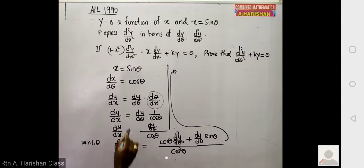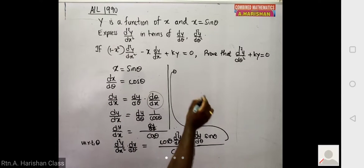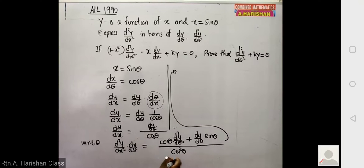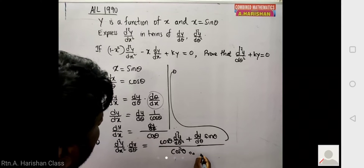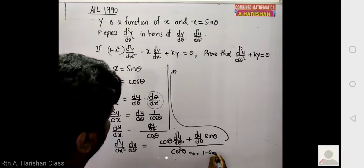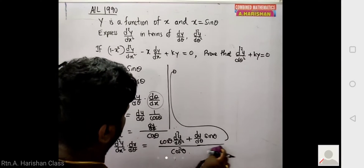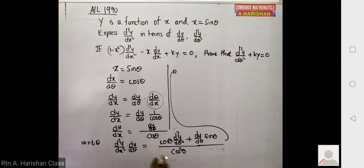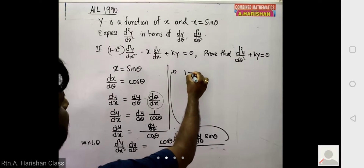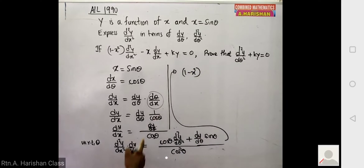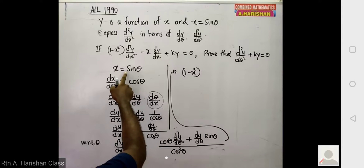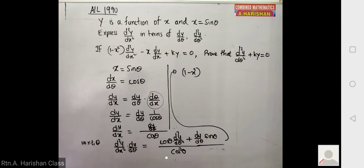On the left side, dx/dθ is cos θ, giving cos² θ. Now I substitute: cos² θ equals 1 minus sin² θ, which equals 1 minus x², since sin θ equals x. So 1 minus x² appears on the left-hand side.